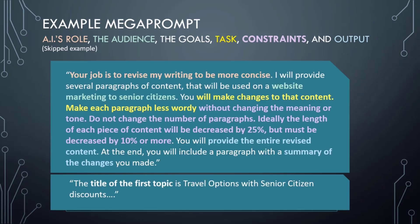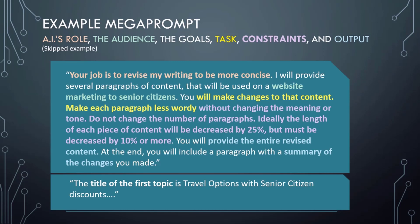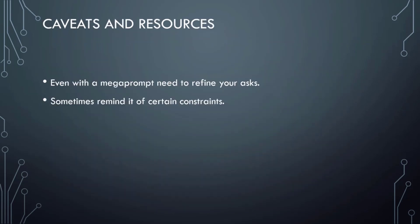The mega prompt is: your job is to revise my writing to be more concise. I will provide several paragraphs of content that will be used on a website marketing to senior citizens. You will make changes to that content — make each paragraph less wordy without changing the meaning or tone. Do not change the number of paragraphs. Ideally the length of each piece of content will be decreased by 25 percent, but must be decreased by 10 percent or more. You will provide the entire revised content, and at the end you will include a paragraph with a summary of the changes you made. The title of the first topic is travel options with senior citizen discount.